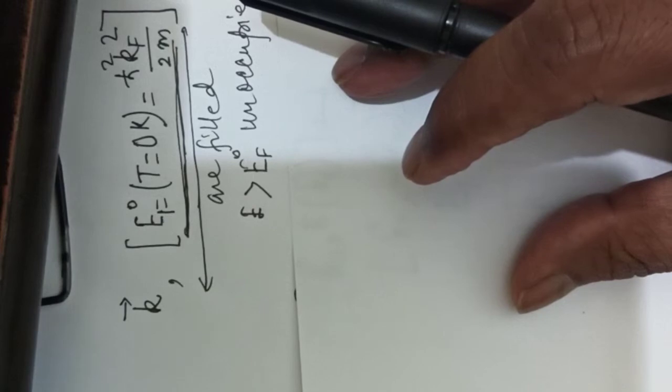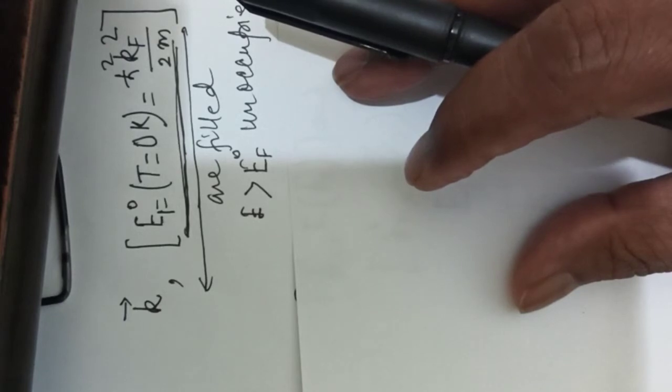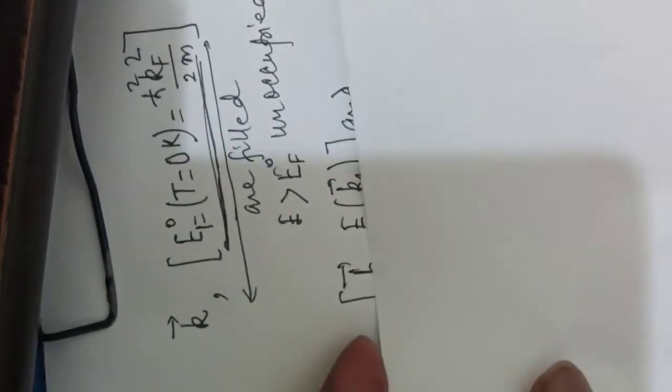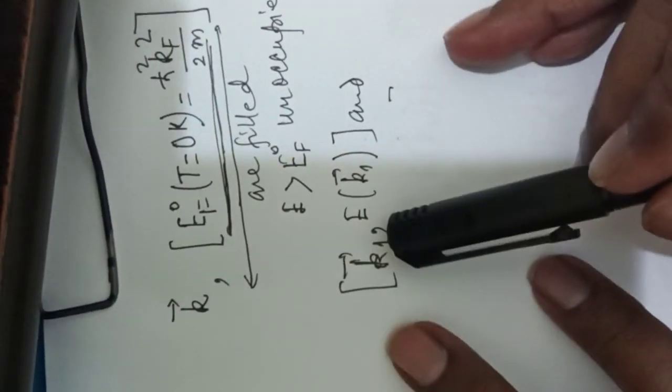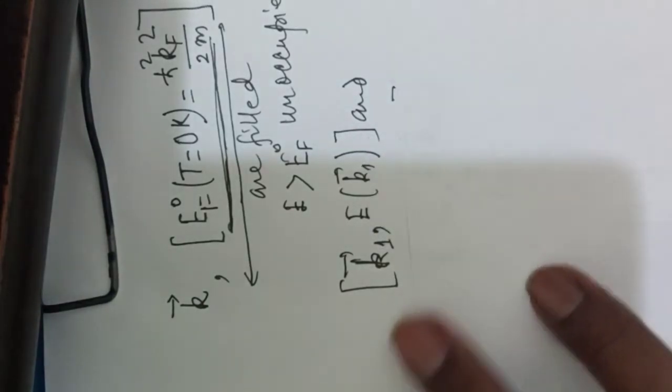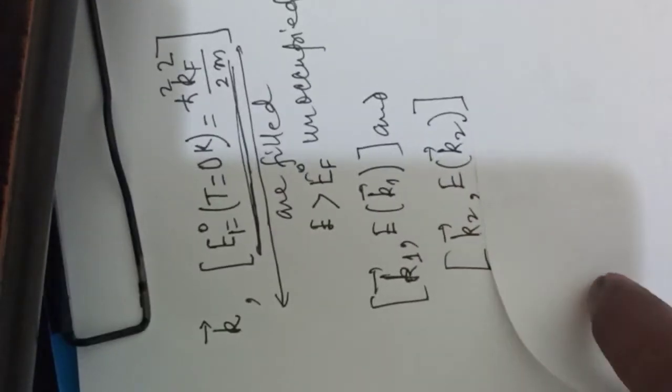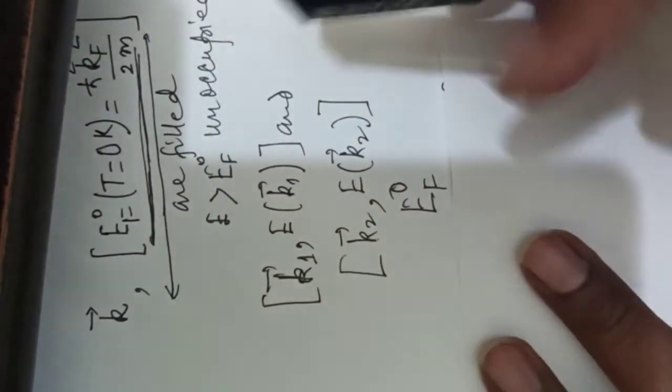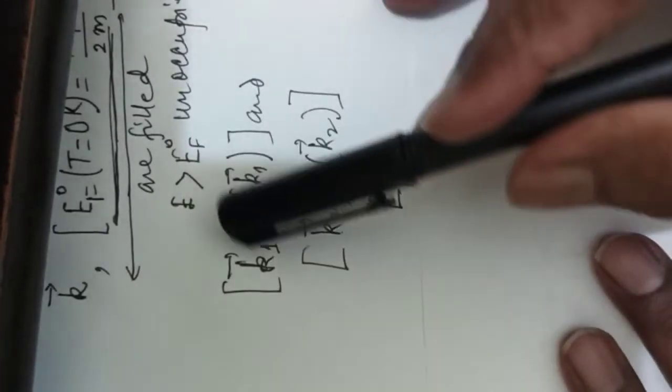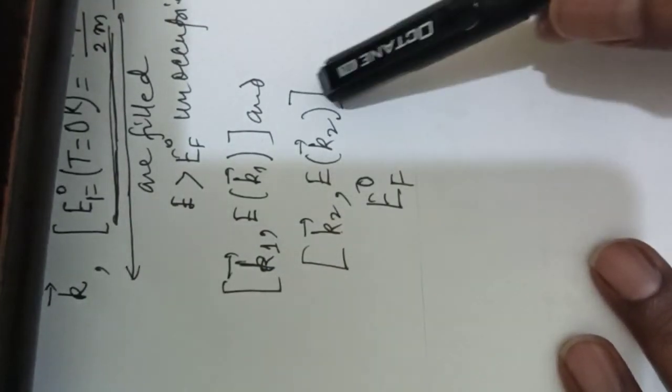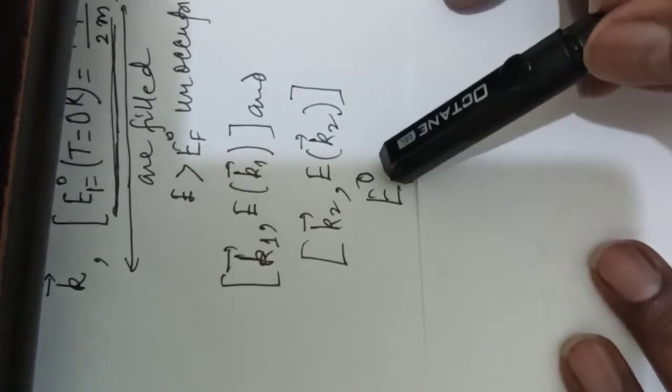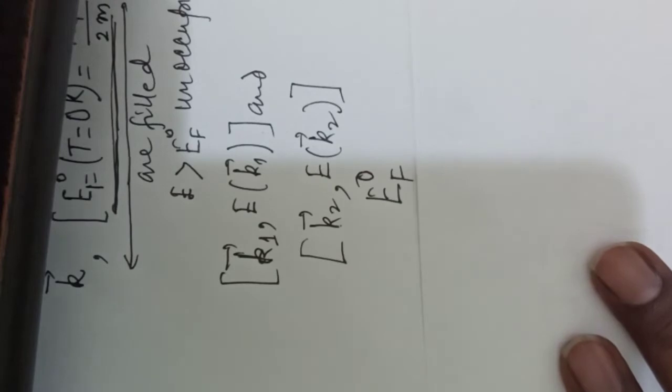We now perform a thought experiment. Thought experiment has nothing to do with the laboratory experiment, so this is to be done completely in our minds. And thereby we add to the system two electrons specified by k₁, Ek₁ and k₂, Ek₂ respectively, in states just above EF0. That means these two electrons are taken from just above the Fermi sphere.